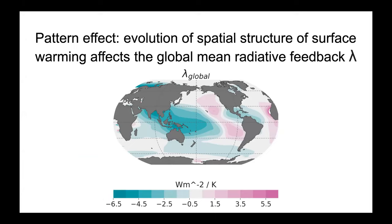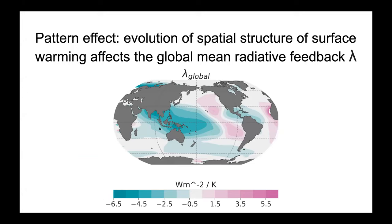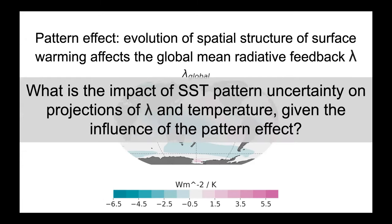For this project, we developed a Green's function from the German MPI atmospheric model ECHAM. The global mean response of radiative feedback per unit SST warming in each grid box is computed. For example, warming somewhere in the West Pacific leads to a largely negative global mean radiative feedback. Our motivating question is: what is the impact of SST pattern uncertainty on projections of feedback and temperature, given the influence of the pattern effect?